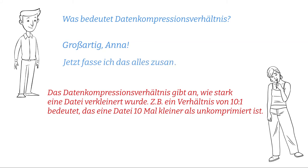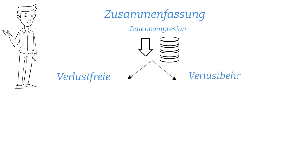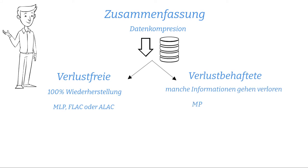Jetzt fasse ich das alles zusammen, um zu sehen, ob ich alles richtig verstanden habe. Datenkompression ist eine Verkleinerung der Datenmengen, damit diese wenig Platz brauchen oder leichter übertragen werden. Dadurch werden redundante Informationen entfernt oder werden Töne, die man sowieso nicht hören kann, weggelassen. Dabei gibt es verlustfreie und verlustbehaftete Kompression. Bei einer verlustfreien Kompression kann eine Datei zu 100% wiederhergestellt werden. Bei einer verlustbehafteten Kompression gehen tatsächliche Informationen verloren, weil hier Anteile, die nicht hörbar sind, weggelassen werden. Diese Dateiformate sind nur für den Endkonsumenten gedacht und nicht für die weitere Bearbeitung. Sehr gut, Adam!